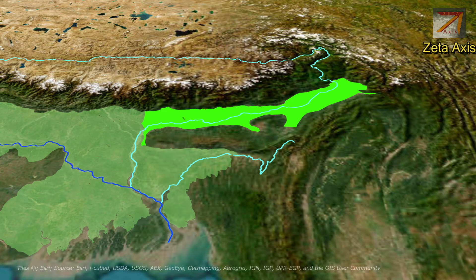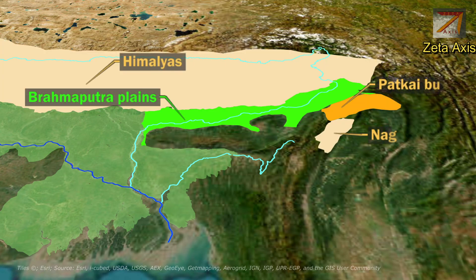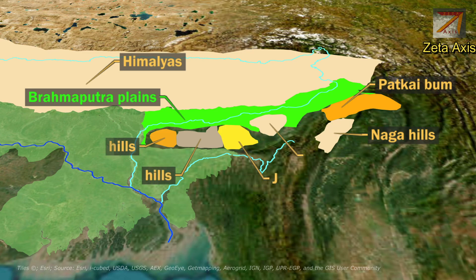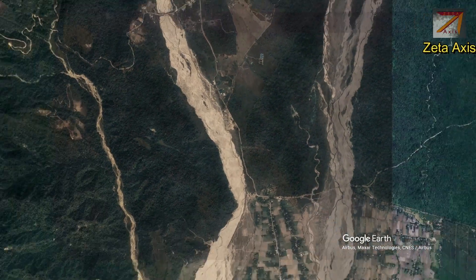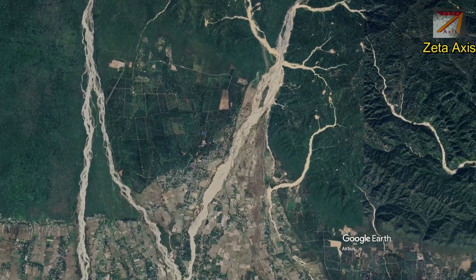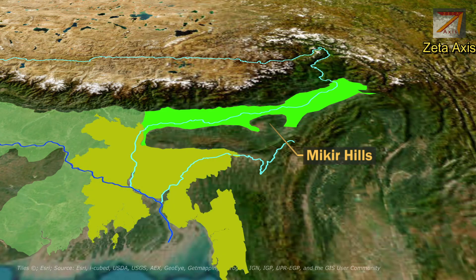The easternmost part of the Indo-Gangetic Plain is the Brahmaputra Plain, built by deposition from the Brahmaputra River and its tributaries. It is bounded by the Himalayas in the north, Manipur and Naga Hills in the east, and the Garo-Khasi-Jaintia and Mikir Hills in the south. Rivers exiting the Shivaliks flow swiftly into the valley, forming large alluvial fans and sandbars. All tributaries along with the Brahmaputra form a plain in the Assam valley. After exiting the Assam valley, the Brahmaputra flows into Bangladesh and forms a delta along with the Ganga and Meghna rivers.